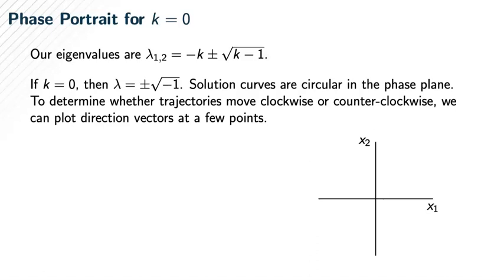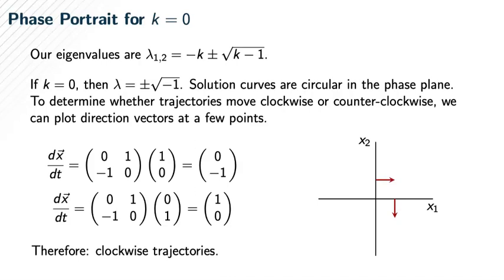To determine whether the trajectories move clockwise or counterclockwise, we plot a few direction vectors. At (1,0), we have a vector pointing straight down. At (0,1), we have a vector pointing right. This suggests that the trajectories move clockwise.